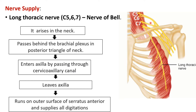The long thoracic nerve arises within the neck from the ventral rami of the C5, C6, and C7 spinal nerves. It then passes behind the brachial plexus in the posterior triangle of the neck and enters the axilla by passing through the cervico-axillary canal — the canal between the neck and the axilla — bounded anteriorly by the clavicle, medially by the first rib, and posteriorly by the upper border of the scapula. It then leaves the axilla and runs on the outer surface of the serratus anterior, supplying each digitation. Notably, unlike most muscles supplied on their deeper surface, this nerve runs superficially, making it liable to injury.